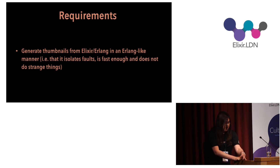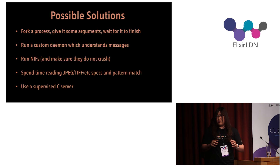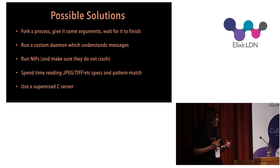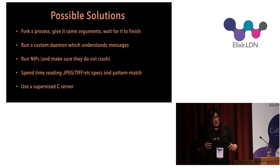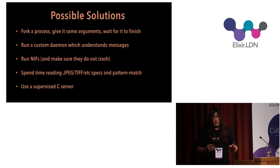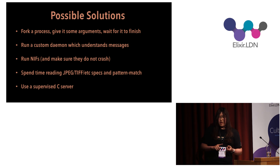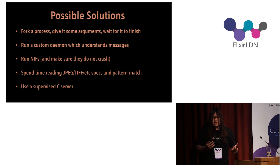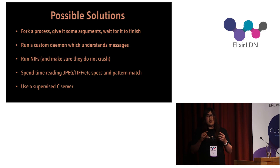The requirements are pretty clear: just make a thumbnail and make sure it's generated properly. There are several possible solutions. The first one is you fork a process, give it some arguments, and wait for it to finish — but this may be slow because you have to load the code, wait for it to finish, and then some cleanup has to happen.